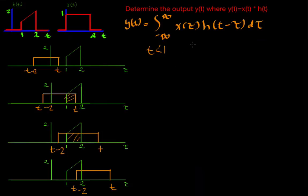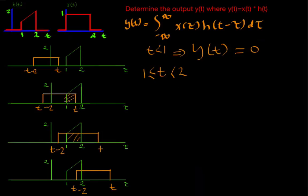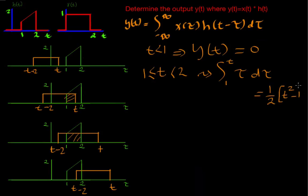In Case 1, when t is less than one, there is no overlapping so y(t) equals zero. In Case 2, when t is greater than or equal to one and less than two, we have overlapping from one to t, so we integrate from one to t: the integral of tau d-tau equals one half t squared minus one.